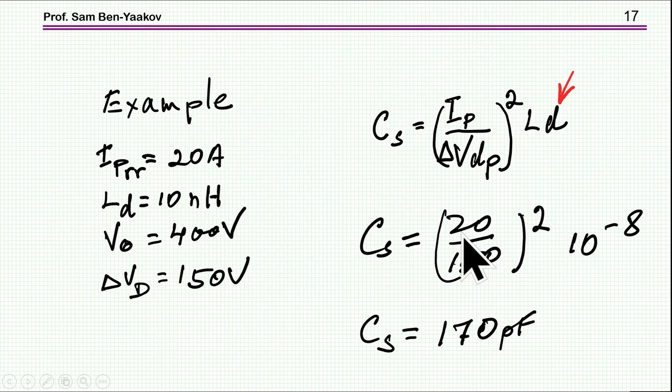So let's take an example. Suppose the reverse recovery current is 20 amp. Let's assume that the inductance is 10 nano Henry, output 400 volt, and let's assume that I allow an extra 150 volt across the diode. That is, I'm going to have something like 550 volt across the diode. So, knowing the estimate value for LD, I can calculate the capacitance, and it comes to be 170 picofarads.